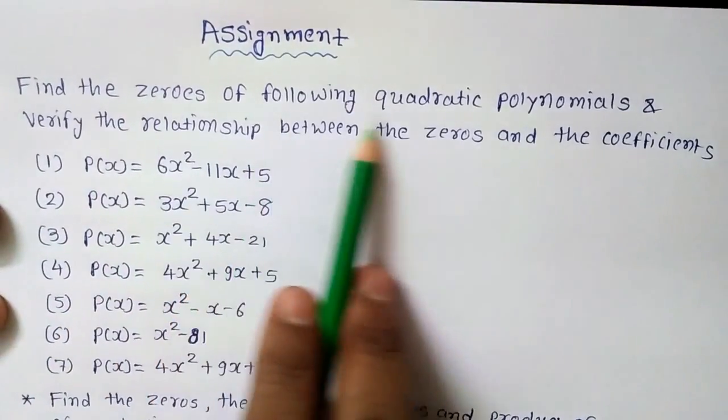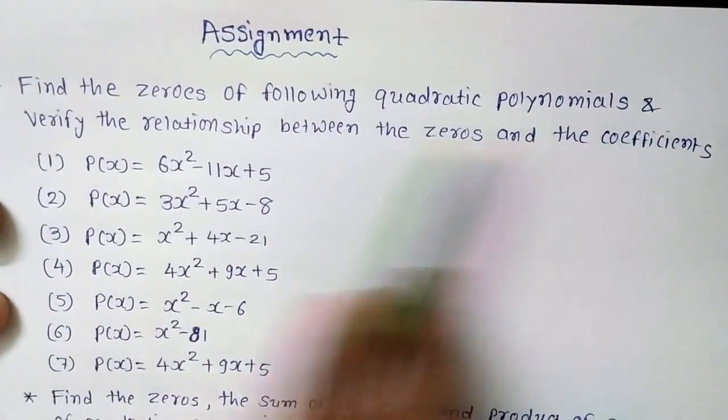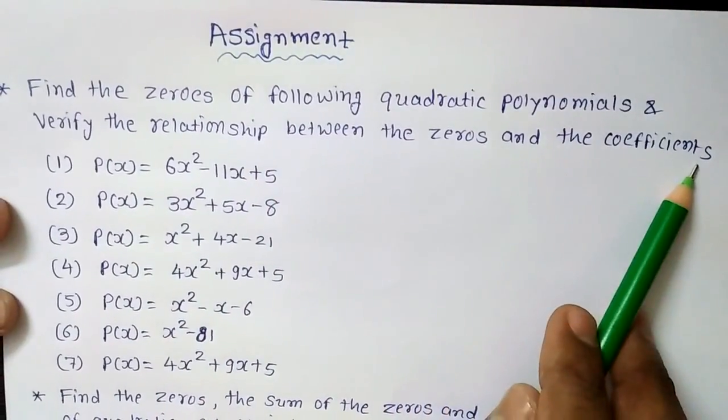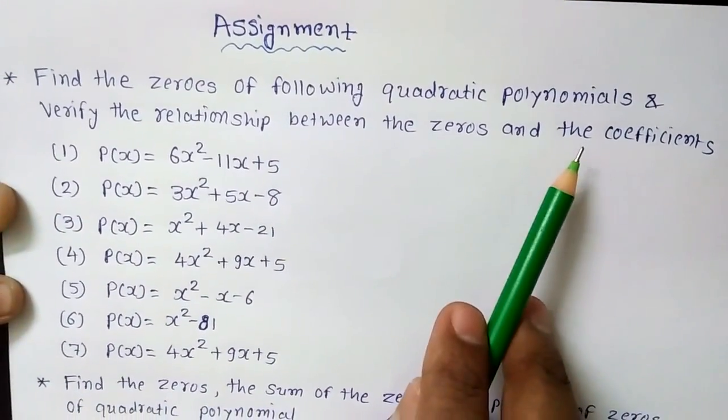find the zeros of the following quadratic polynomials and verify the relationship between the zeros and the coefficient that I have already shown in the earlier video.